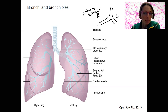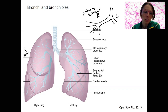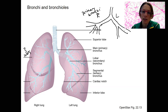This primary bronchi is going to divide again, splitting into three on the right side. It's going to split into two on the left side. These are the secondary bronchi.